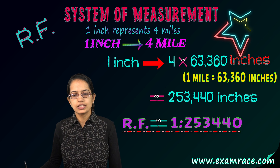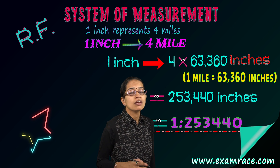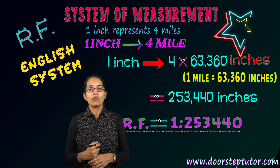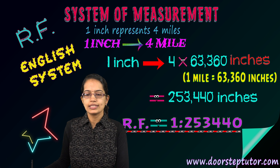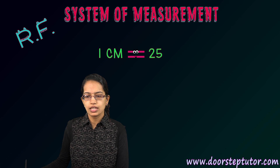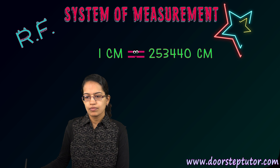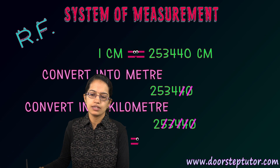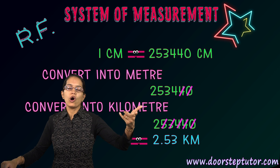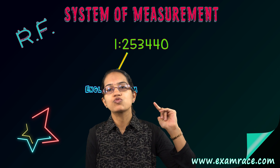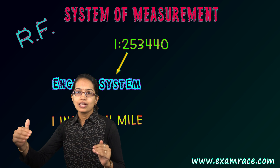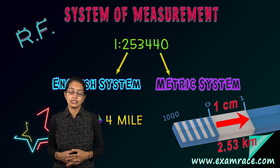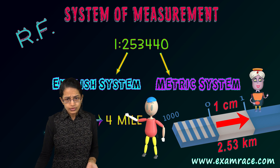If I receive this representative fraction from the English system but I am based in India, I can comprehend it in metric terms. So 1 centimeter equals 253,440 centimeters — converting to meters and then to kilometers gives 2.53 kilometers. What was originally expressed as 1 inch represents 4 miles has been converted to the metric system as 1 centimeter equals 2.53 kilometers.